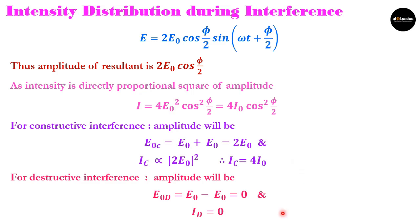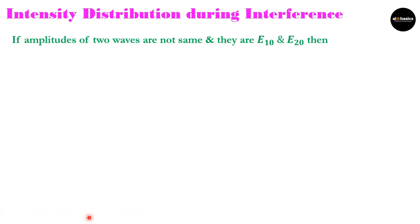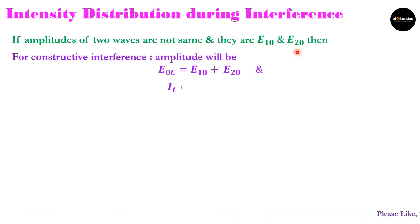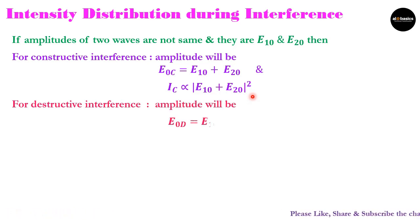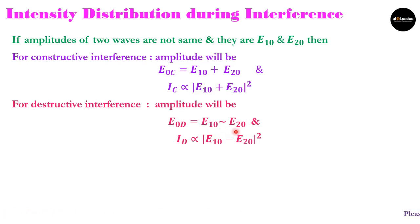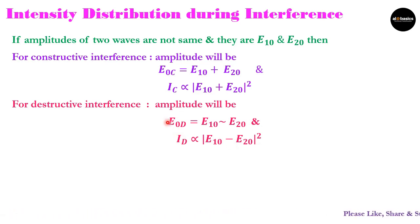But if the amplitudes of the two waves are not the same — suppose they are E10 and E20 — then for constructive interference, amplitude E0c = E10 + E20, and intensity Ic ∝ |E10 + E20|². For destructive interference, E0d = |E10 − E20|, and intensity Id ∝ |E10 − E20|². In this way we can get intensity for constructive and destructive interference depending on the amplitudes.